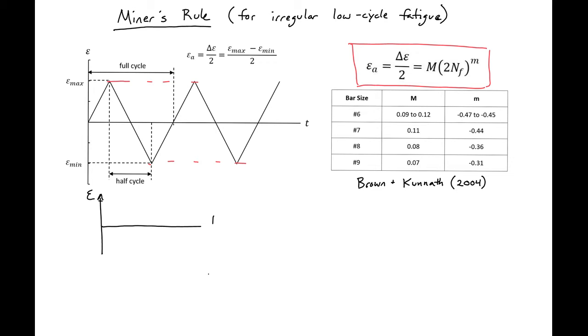Let's say rather than having a nice strain history, we have a rather irregular one, which may be more typical of a structure.